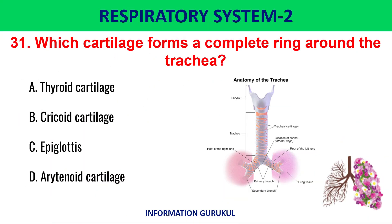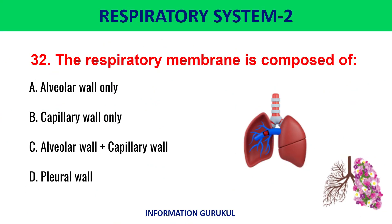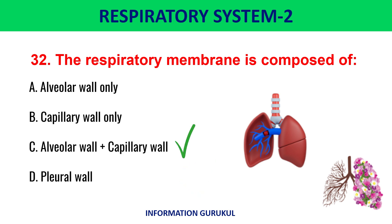Which cartilage forms a complete ring around the trachea? Cricoid cartilage. The respiratory membrane is composed of the alveolar wall plus the capillary wall.